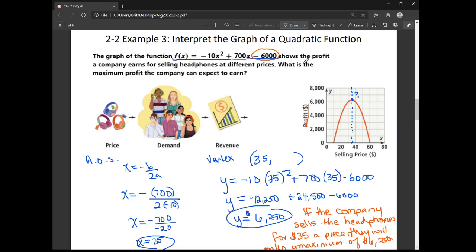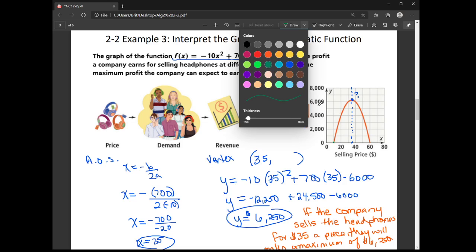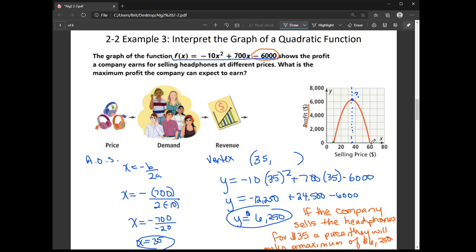The other interesting idea is these points right here, the zeros of the function at 10 and 60. We call these the break-even points. Because if I sell the headset for 10 bucks or if I sell it for 60 bucks, I'm going to make zero dollars in profit.